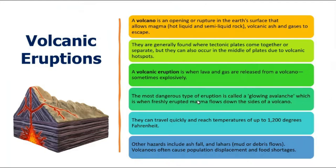The most dangerous type of volcanic eruption is called a glowing avalanche. When we correlate the flowing of magma with a snow avalanche — in an avalanche the flowing material is snow, but here it is magma, which is very hot, around 1,200 degrees Fahrenheit. This glowing avalanche of very freshly erupted magma flows down through the sides of volcanoes, travelling quickly and reaching temperatures of around 1,200 degrees Fahrenheit.